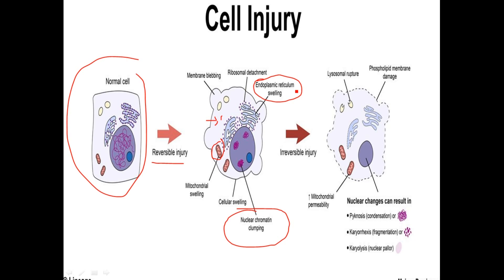When the endoplasmic reticulum swells and ribosomes detach, decreased protein synthesis occurs. Proteins are very important for making the structural framework of the cell, so there is decreased production of cytoskeletal proteins, decreased cell receptors, and many enzymes won't work — causing serious damage to the cell.